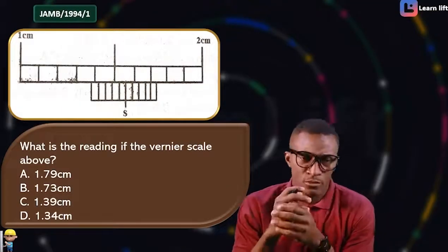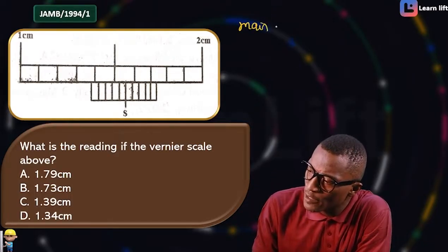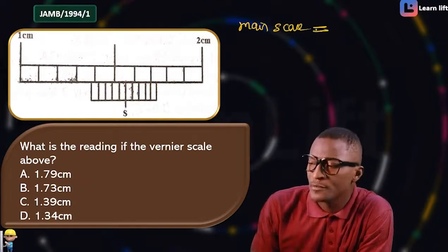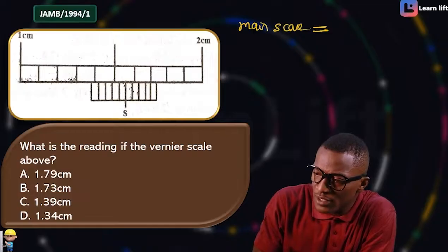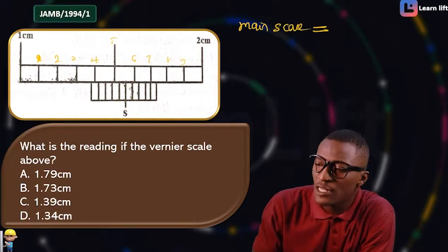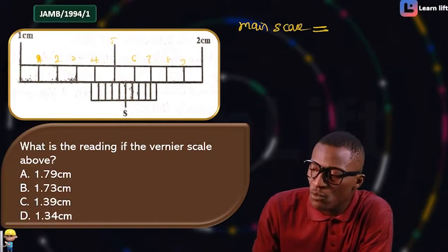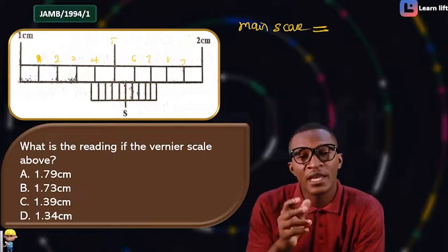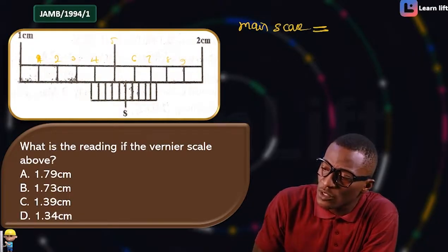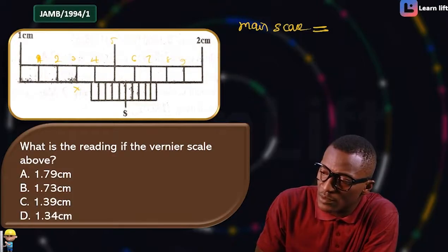In this next question, we need to find the vernier scale reading. First, get the main scale reading. Let's count: 1, 1.1, 1.2, 1.3, 1.4, 1.5, 1.6, 1.7, 1.8, 1.9, 2 — each line is 0.1. We start from the line just before the zero of the vernier scale. If this is 1.1 and this is 1.3, the main scale reading is 1.3.